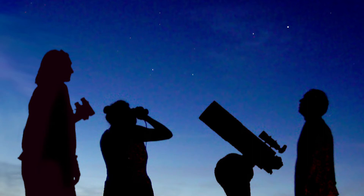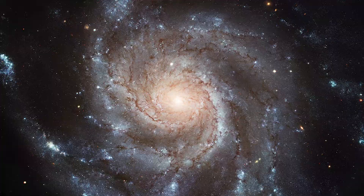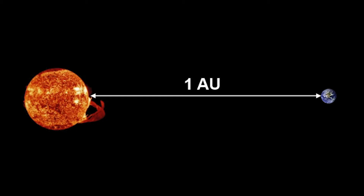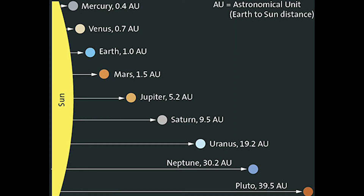Hey guys, so today let's talk about the units used in astronomy to count distances to faraway nebulas, galaxies or stars. First is the astronomical unit, or the AU. An astronomical unit is the average distance between the Earth and the Sun — it is about 150 million kilometers.